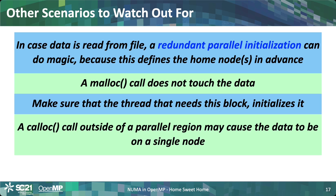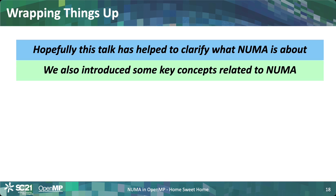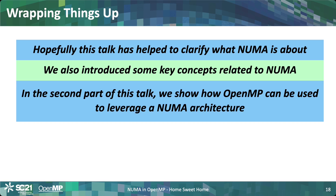Another one to watch out for is calloc. Calloc will initialize the memory block to zero for you, which is convenient, but it also means that after the calloc call the home node has been defined, and that may or may not be a desirable situation. So to wrap up this short overview of NUMA: I hope it has helped you understand better what NUMA is about and the kinds of things to watch out for. I've introduced key concepts like first touch, the home node, memory allocation placement, transparent memory access, and the difference between local and remote accesses. Some of that will come back in the second part of the talk, where I'll show you how to use OpenMP to leverage a NUMA architecture.